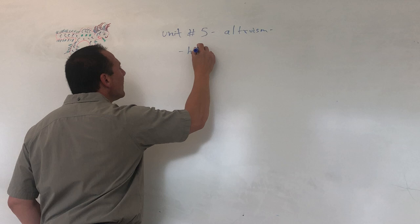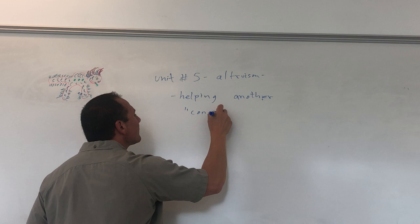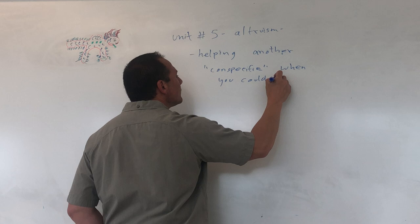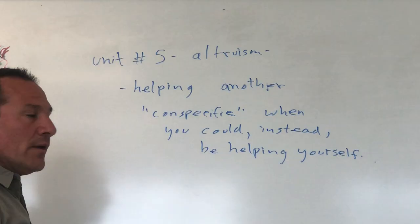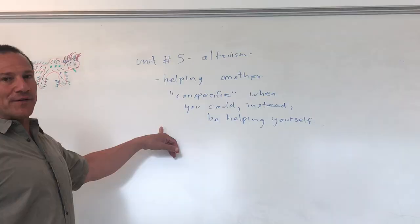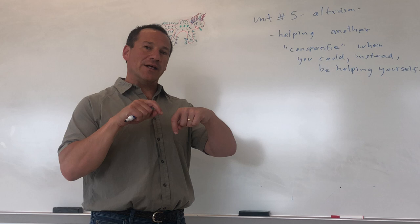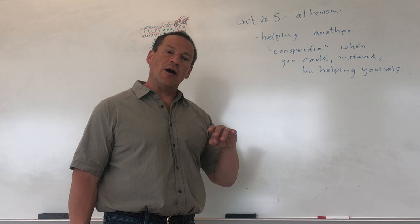Altruism is basically defined as helping another individual, or another conspecific — a term from Darwin meaning members of the same species. You and I are conspecifics; we're both humans. So altruism is generally defined as helping another conspecific when you could instead be helping yourself.